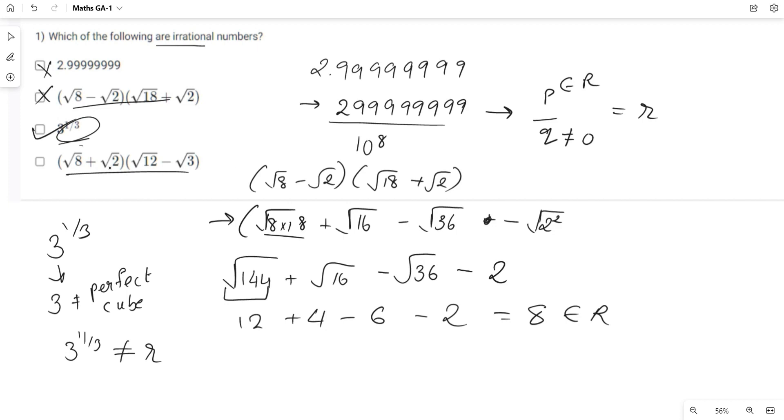Last option: root 8 plus root 2, multiplied by root 12 minus root 3. On simplifying, we get root 96 minus root 24 plus root 24 minus root 6. Root 96 is 4 root 6 minus root 6, which equals 3 root 6.